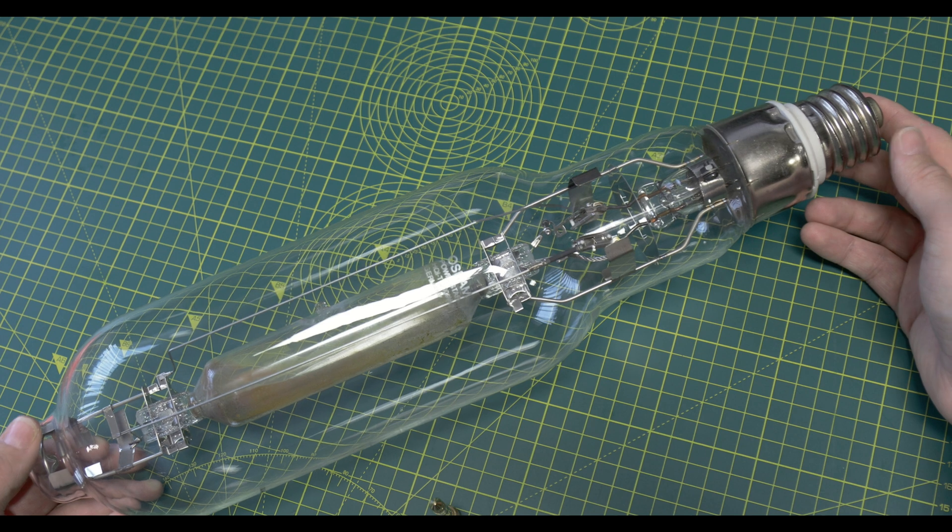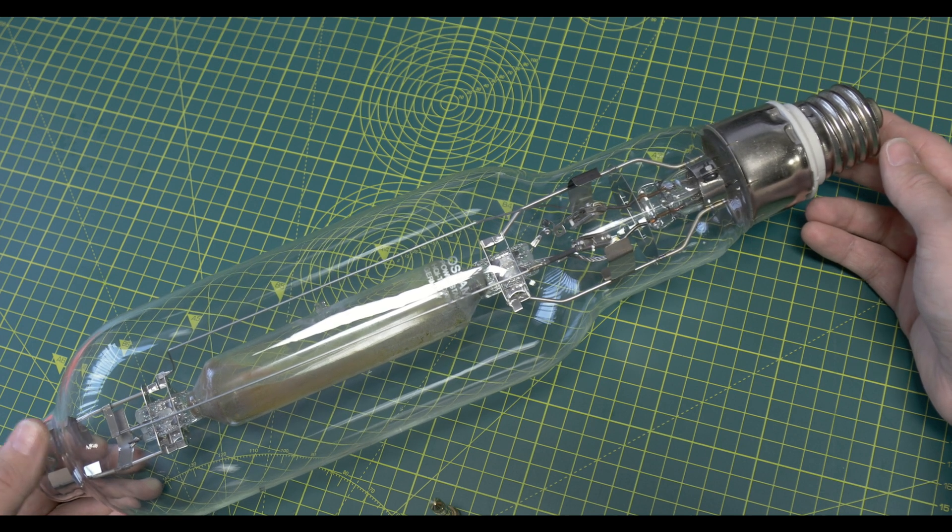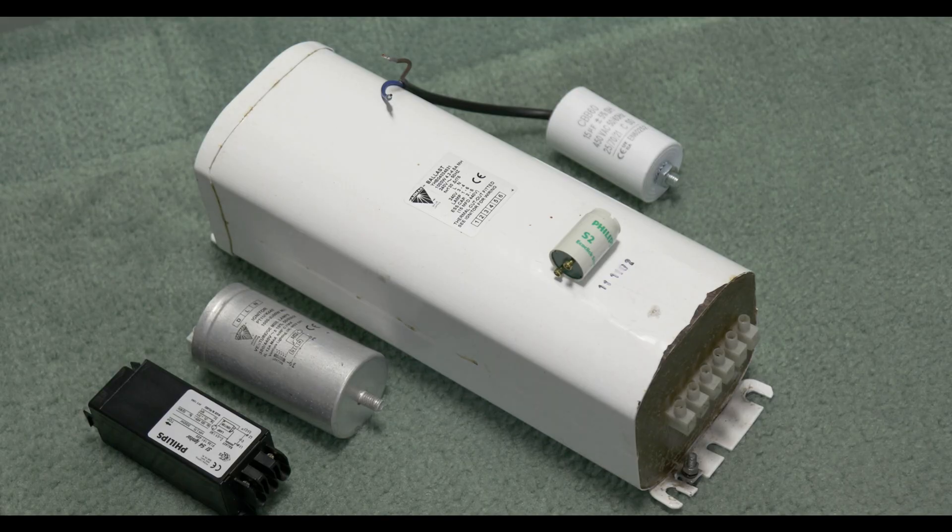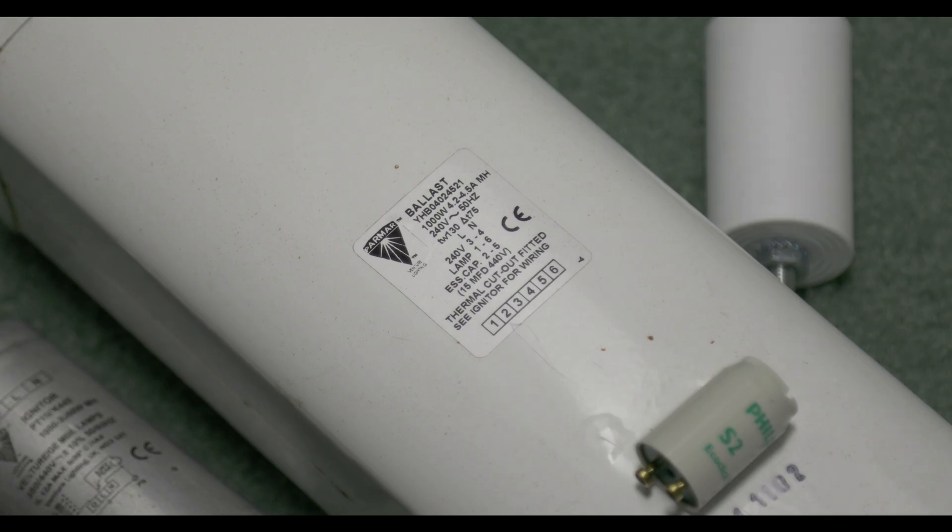But then I found these. What these actually are is a ballast which is designed to run one 1000 watt metal halide lamp, which is normally run between a couple of phases on high voltage gear on normal single phase 240 volt mains. What's actually inside it is basically a step-up transformer and then just a normal high voltage choke.